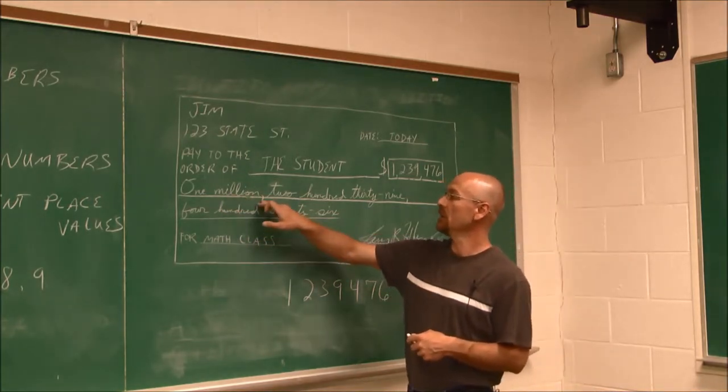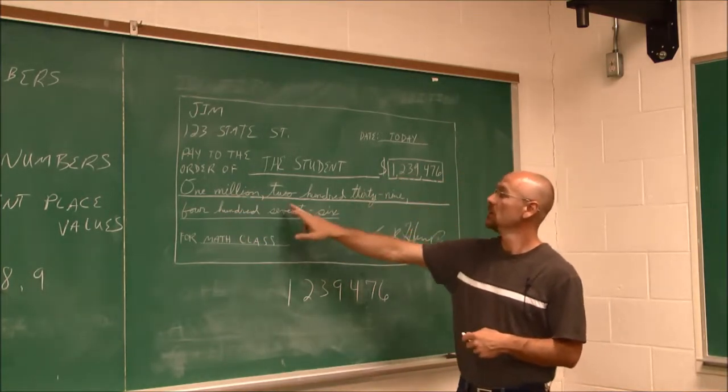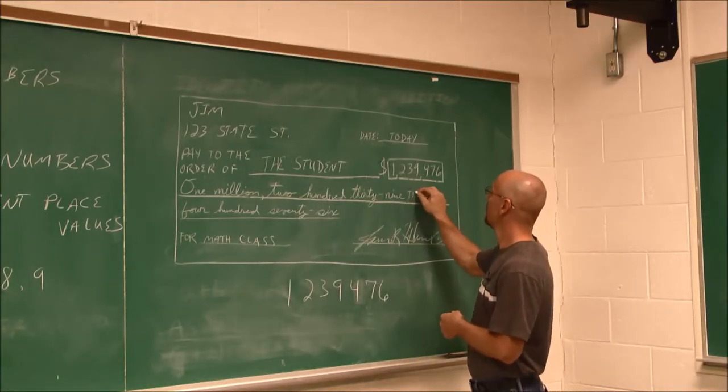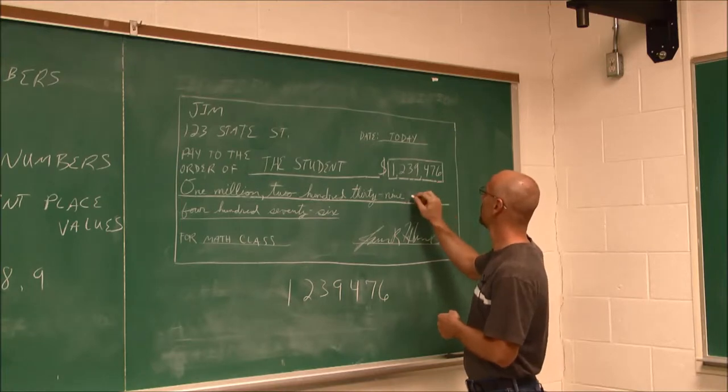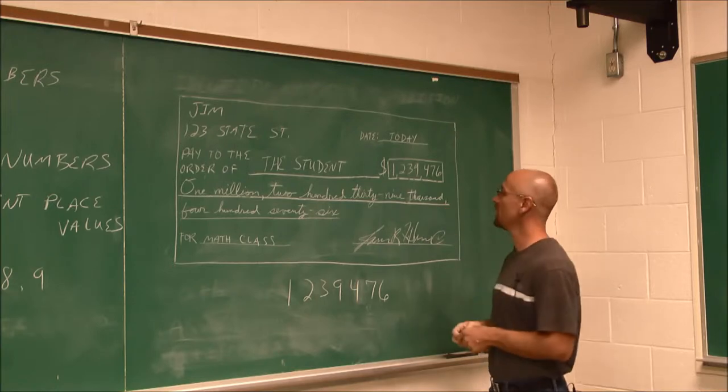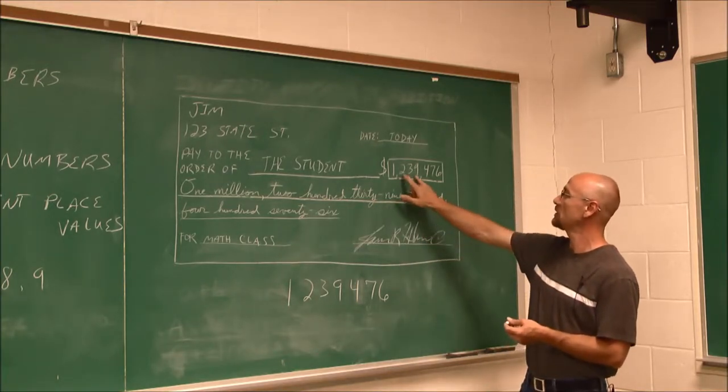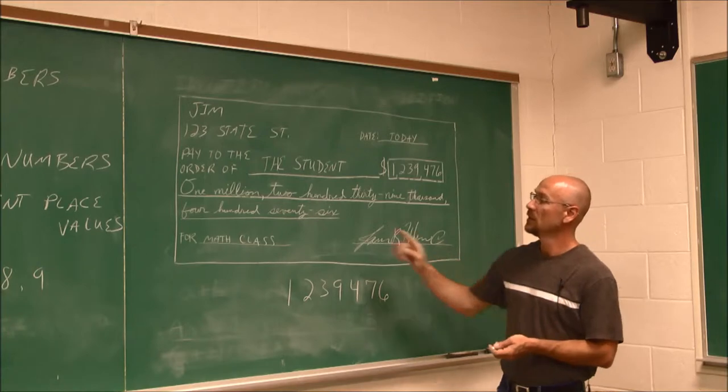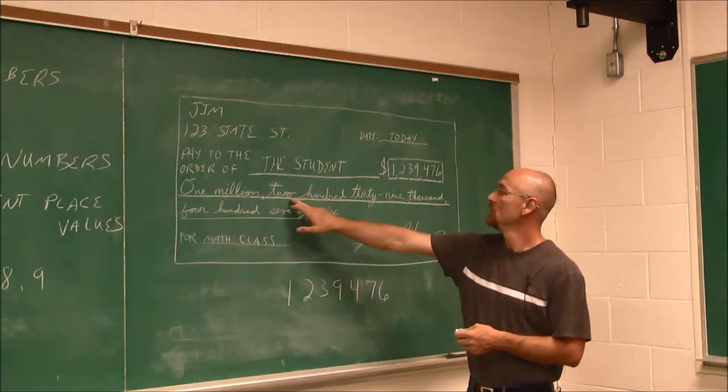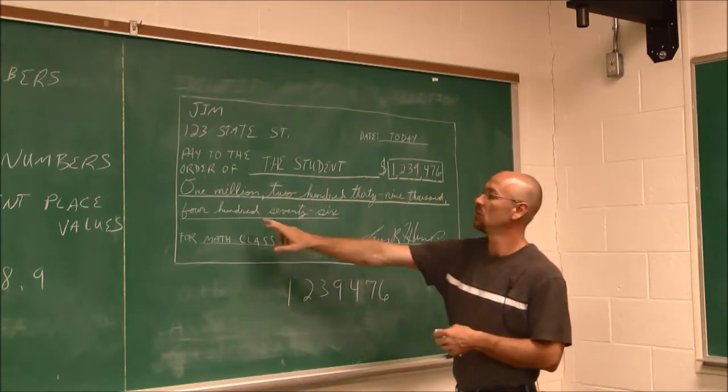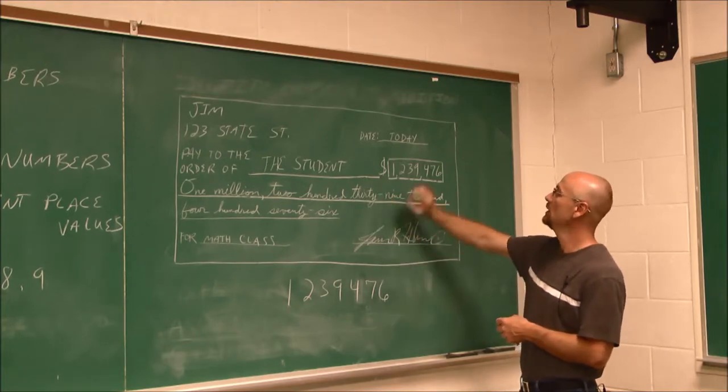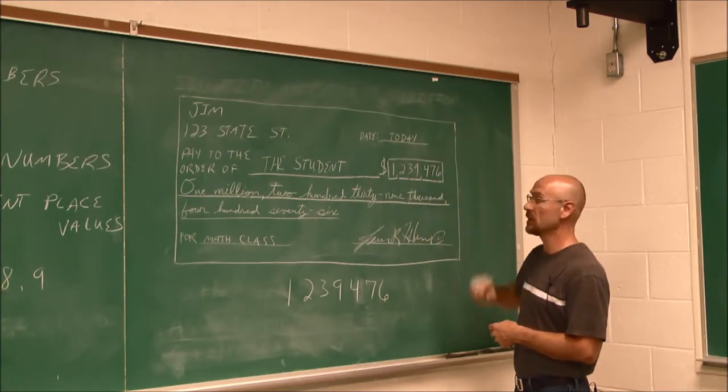So we have 1,000,000, and we have that same comma here. 239. Oh, I forgot 1,000. Let me write that in there. 1,000, because we have to indicate the place value. 239 is in the 1,000th period, 476. Now, we'll reread that. 1,239,476. This English word or words describes this number in standard form.